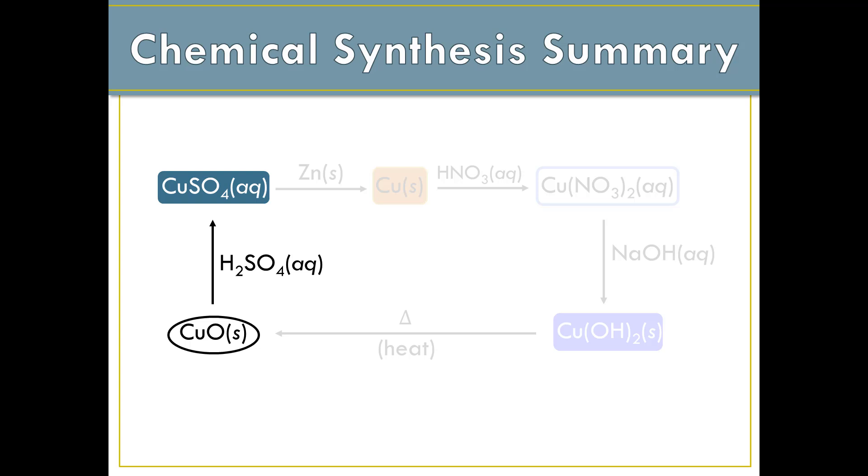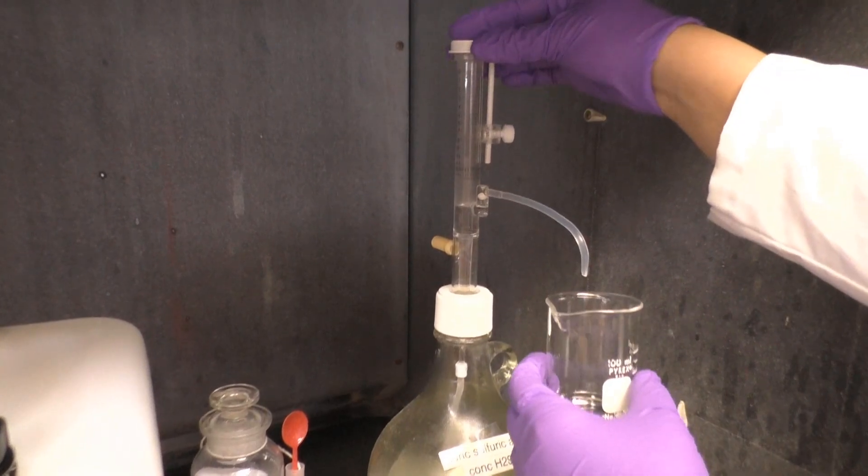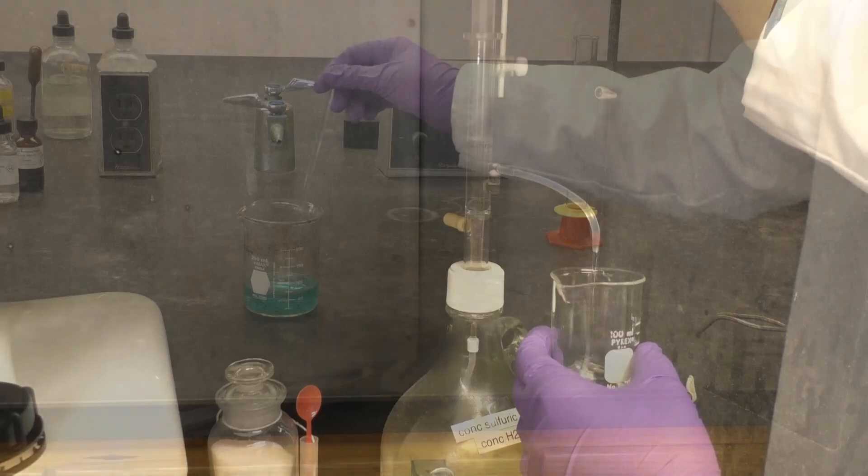The penultimate step of our synthesis is another ionic metathesis reaction to convert copper-2-oxide to copper-2-sulfate by addition of sulfuric acid. All you have to do is add 15 milliliters of 6 molar sulfuric acid from the repipetter in the hood to your copper-2-oxide black precipitate.